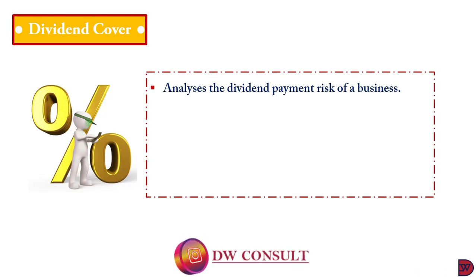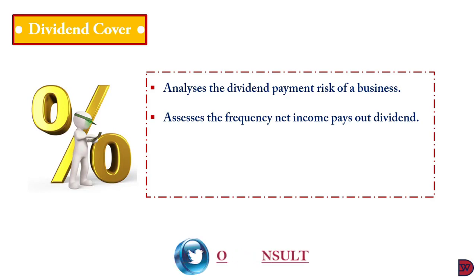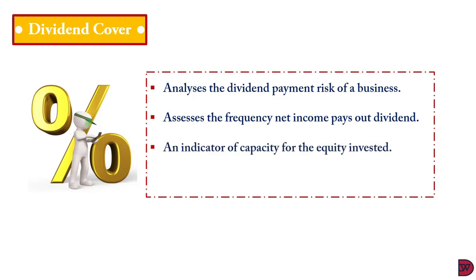When we talk about dividend cover, we are talking about the risk with dividend payment to the equity holders of a business. It looks at the number of times that a business's current net profit or income can pay its existing dividend. If you're looking at months, we talk about the number of months; if it's a quarter, the number of quarters; if it's a year, the number of years — depending on the calculation.